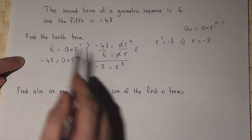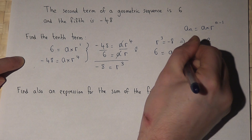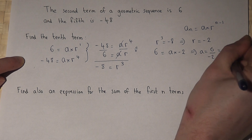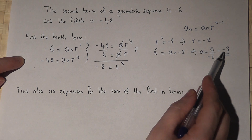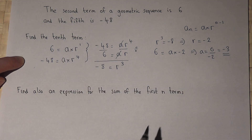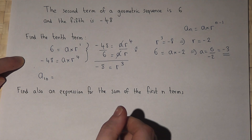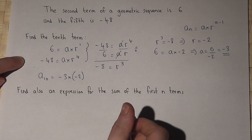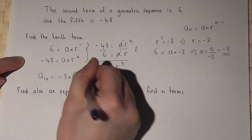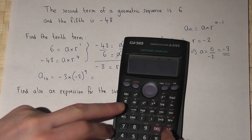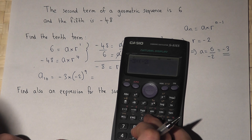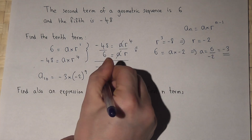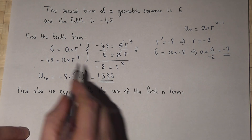This means r equals the cube root of minus 8, which is minus 2. Because 6 equals a times r and r is minus 2, then a must equal 6 over minus 2, which is minus 3. So we know r and a. To find the 10th term, we do a times r to the power of n minus 1, which is 10 minus 1 equals 9. On our calculator: minus 3 times (minus 2) to the power of 9, which gives 1536. So 1536 is the 10th term.